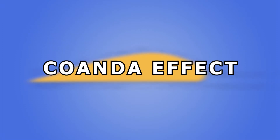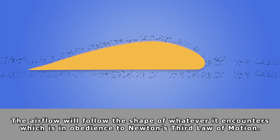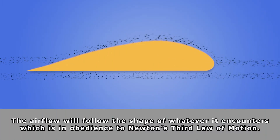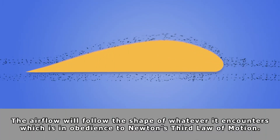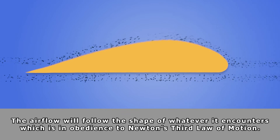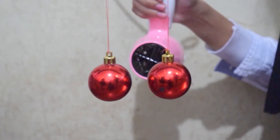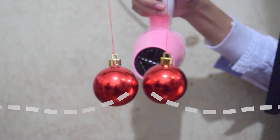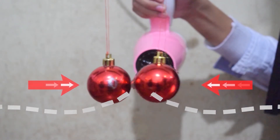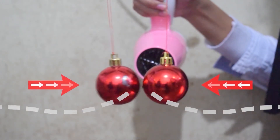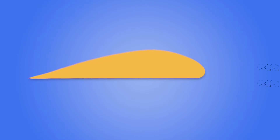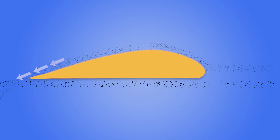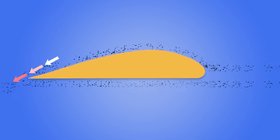To understand lift better, let us look at how air moves around an object. There is one effect that states the airflow will follow the shape of whatever it encounters, which is in obedience to Newton's third law of motion. Let's demonstrate: as the air flows between the Christmas balls, it follows their shape and the air is directed outward, causing the balls to move together inward.